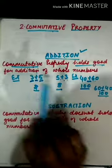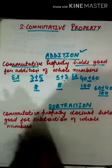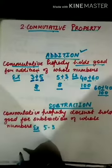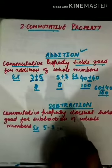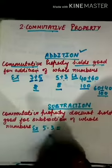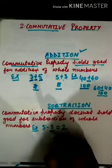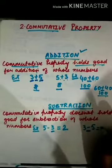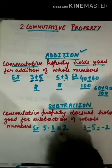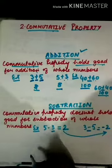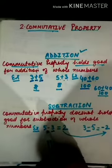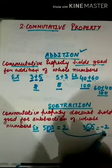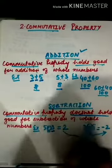Now let's check the commutative property for subtraction. Take 5 minus 3 — subtracting 3 from 5 gives 2. Now change the order: 3 minus 5 gives minus 2. The answers are different. So when I change the order of the whole numbers in a subtraction operation, my answer is not the same. That means commutative property does not hold good for subtraction.